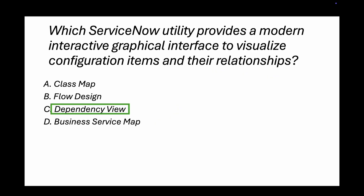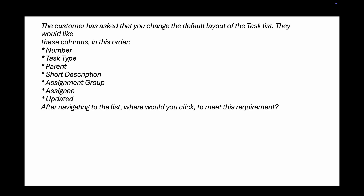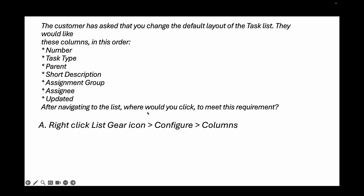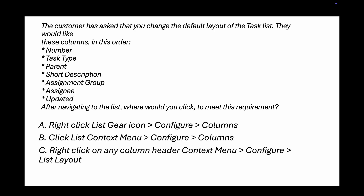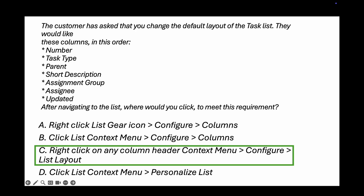Question number six: a customer wants to change the default layout of the task list with columns in this order: number, task type, parent, short description, assignment group, assigned, updated. After navigating to the list, where would you click? Options include: right-click list gear, configure columns; check list context menu configure columns; right-click column header context menu configure list layout; or click list context menu personalize list. We're not personalizing anything, so the right answer is configure list layout — option C.